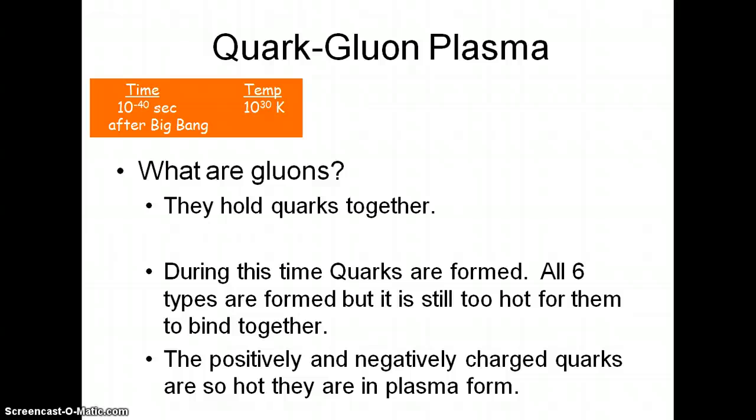First we start with this quark-gluon plasma. Gluons are what hold quarks together, and quarks are what make up protons and neutrons. During this time — at 10 to the negative 40 seconds after the Big Bang — all six types of quarks are being formed: up, down, top, bottom, strange, and charm. But it's still too hot for them to bind together and form protons and neutrons, so we have positively and negatively charged quarks in plasma form at this point.